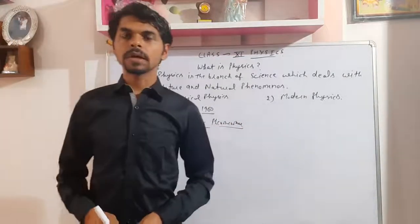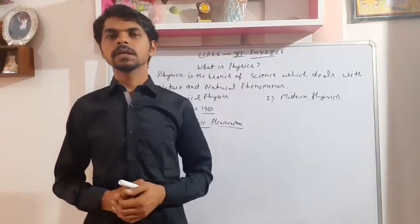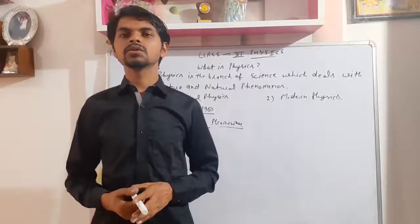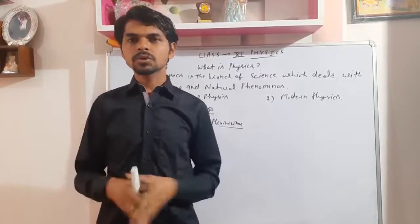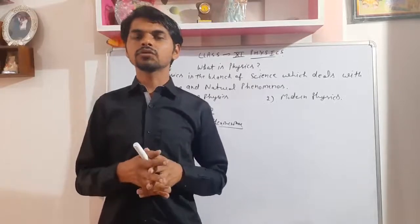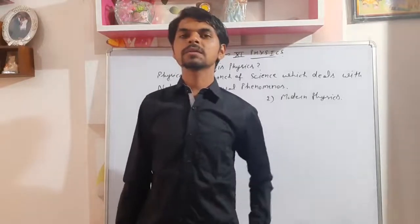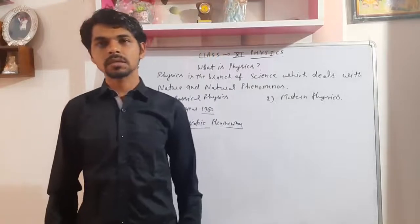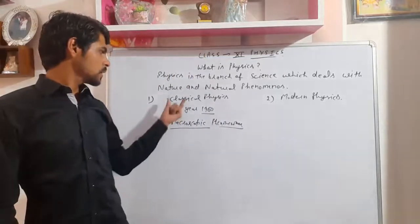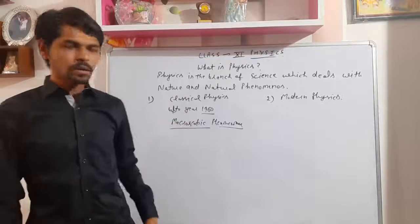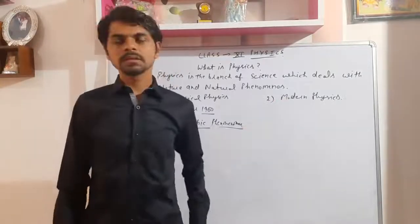Macro means large. Classical physics dealt with large-size objects around us. Microscopic things — like atoms, atomic structure, viruses — the study of those was not part of classical physics at that time. The study was all about macroscopic things, large-size objects around us, such as the sun. All the large phenomena and large objects were studied under classical physics, which was discovered up to 1900.